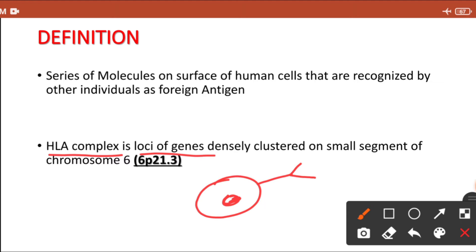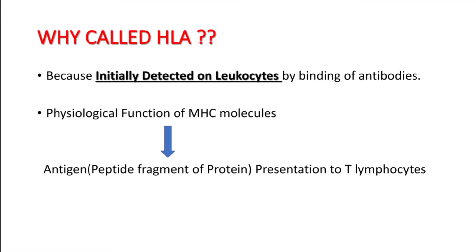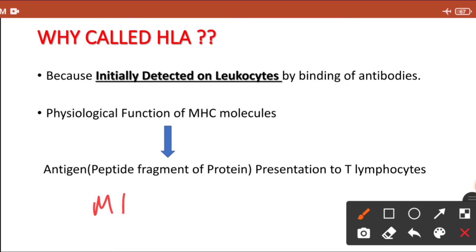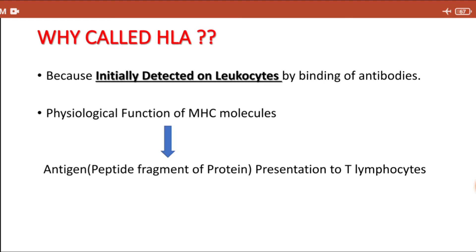The MHC genes are densely clustered over a small segment of chromosome number 6, specifically on the short arm of chromosome 6. Now, why is it called an HLA molecule? Because it was first discovered on leukocytes — it was initially detected on leukocytes by its corresponding antibody — and that's why it is known as human leukocyte antigen.